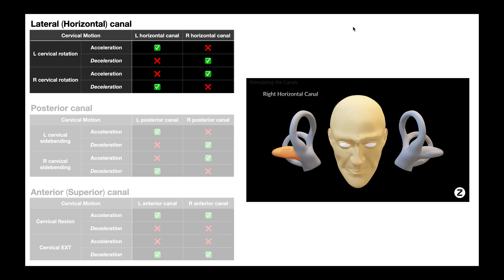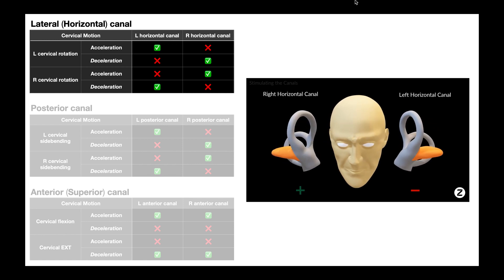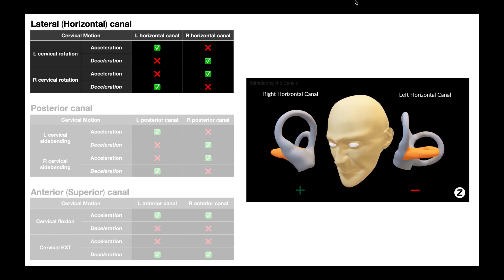Looking at the video animation: the right horizontal canal and the left horizontal canal are highlighted. As the person rotates to the left, the positive sign indicates depolarization of the left horizontal canal during the acceleration phase. As he decelerates, it flips — the left horizontal canal hyperpolarizes. With right rotation, the left horizontal canal is hyperpolarized during acceleration, but as soon as deceleration begins through right rotation, the left horizontal canal depolarizes.